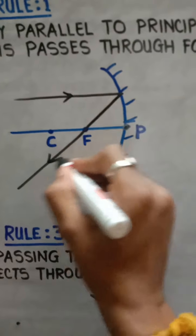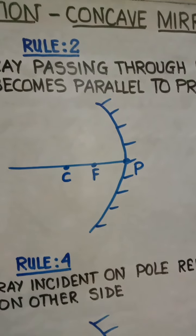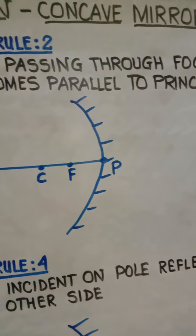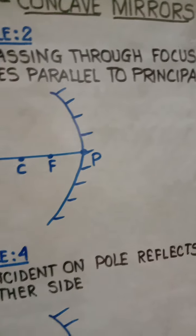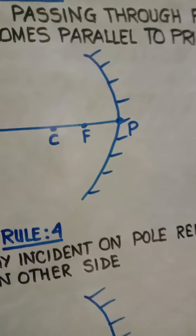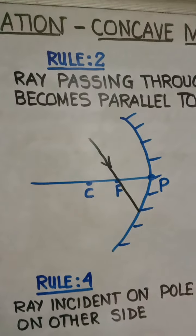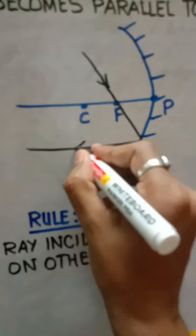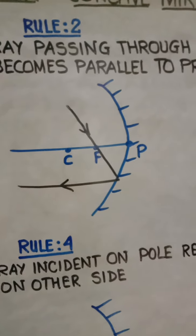Rule number two is the opposite of rule number one. According to rule number two, if an incident ray of light is passing through the focus, it will become parallel to the principal axis after hitting the mirror. So the incident ray passing through the focus strikes the mirror and becomes parallel to the principal axis. Use a scale for proper demonstration.